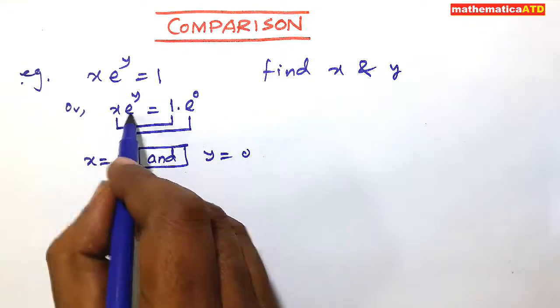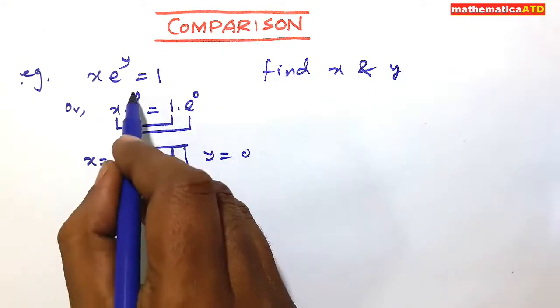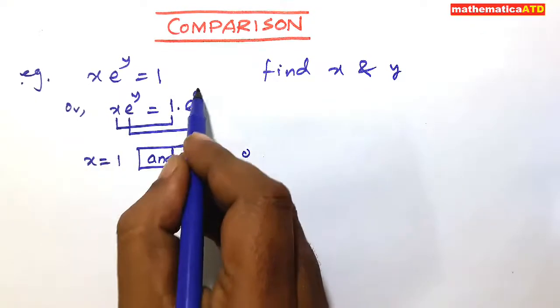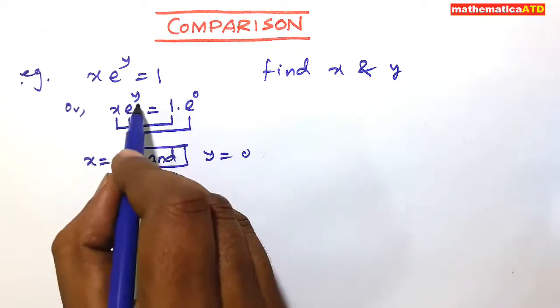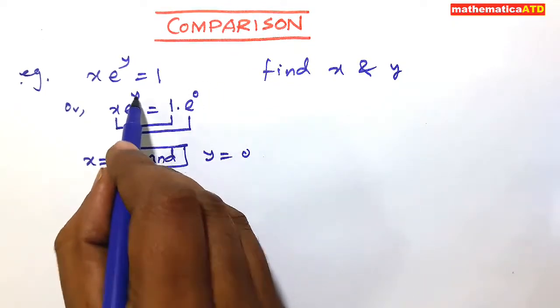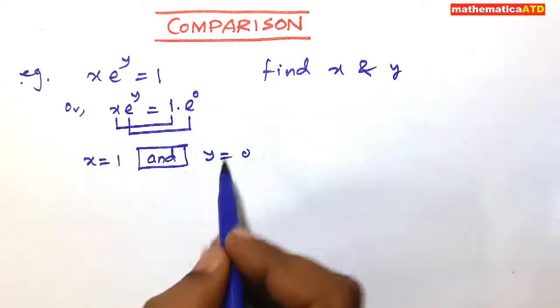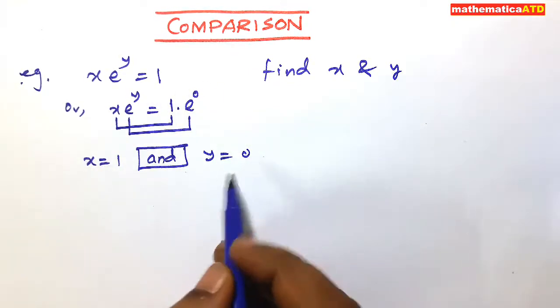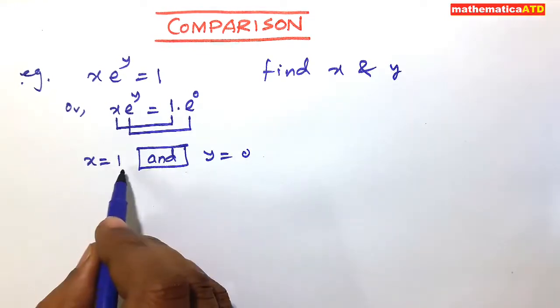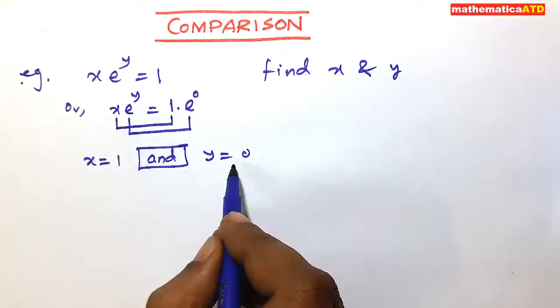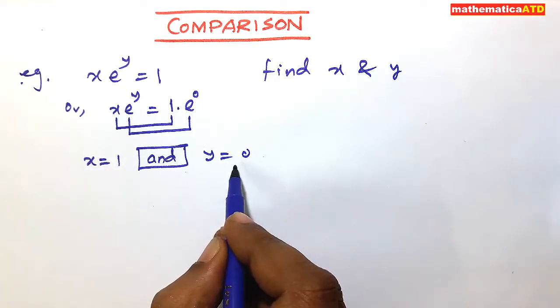The bases are the same: e and e. e to the power y and e to the power 0 — the powers are respectively y and 0. So y is equal to 0. Therefore, x is equal to 1 and y is equal to 0.